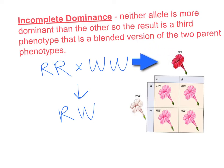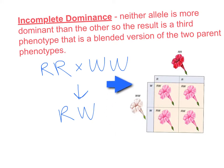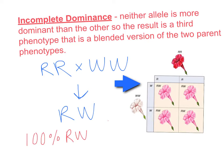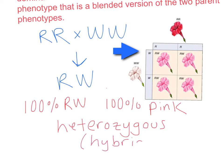In complete dominance, which Gregor Mendel studied, we used the same letter but capital and lowercase. In incomplete dominance, all the letters are capitalized but we use different letters for the different alleles. So for the red coloration in the snapdragon flower, we use capital R, capital R. For the white coloration, we use capital W, capital W. The results in the Punnett square are all RW — 100% of the offspring are heterozygous pink. The genotype is written as 100% RW, and the phenotype is written as 100% pink. This is the heterozygous or hybrid form.